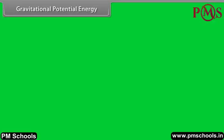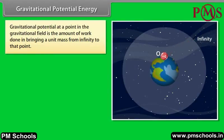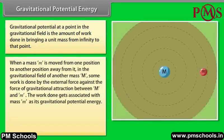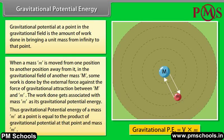Gravitational potential at a point in the gravitational field is the amount of work done in bringing a unit mass from infinity to that point. When a mass m is moved from one position to another in the gravitational field of another mass, some work is done by the external force against the force of gravitational attraction. The work done gets associated with mass m as its gravitational potential energy. Gravitational potential energy of a mass m at a point equals the product of gravitational potential at that point and mass m.